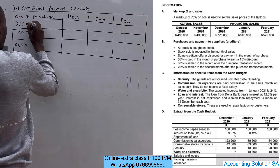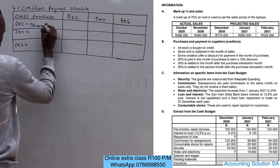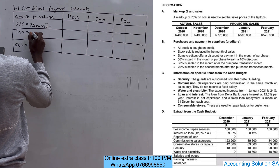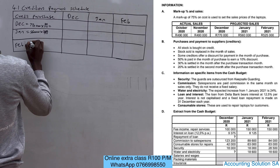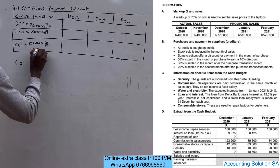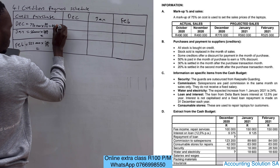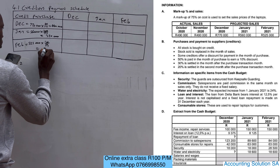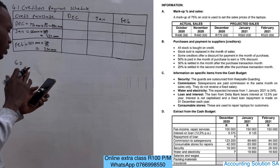For December we're going to have 770,000 multiplied by 100 over 175, because we are looking for cost of sales and our markup is 75 percent. For January we're going to have 560,000 multiplied by 100 over 175. For February it's 525,000 multiplied by 100 over 175. The answers are: December = 440,000; January = 320,000; February = 380,000. You need to make sure that you show this calculation so that you can earn marks.